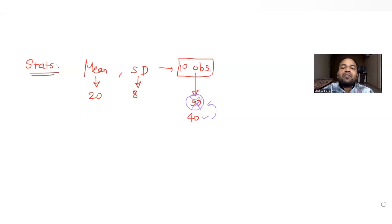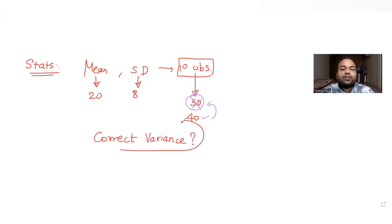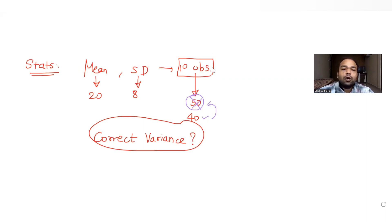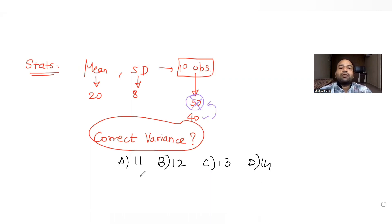So we need to replace that 50 by 40 and find the correct mean and standard deviation. The question asks us to find the correct variance. The options given to us are 11, 12, 13, or 14 — we need to figure out which one is the correct variance.